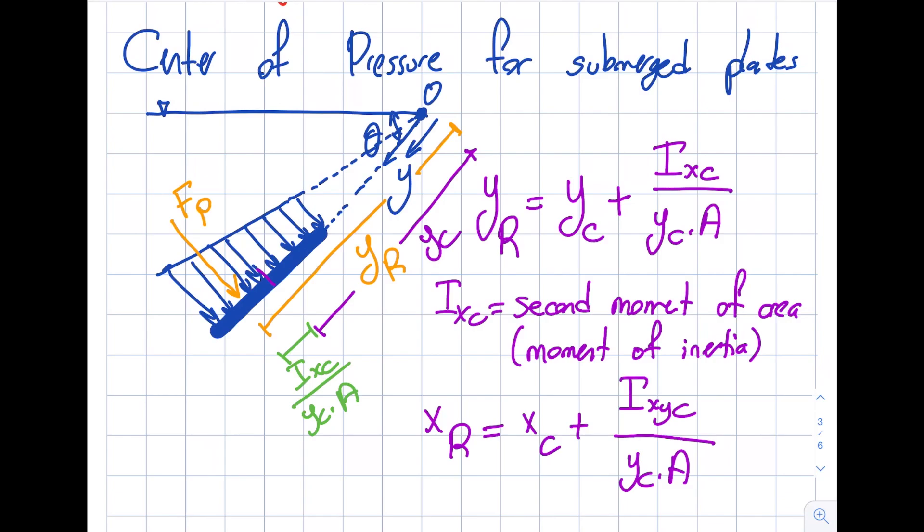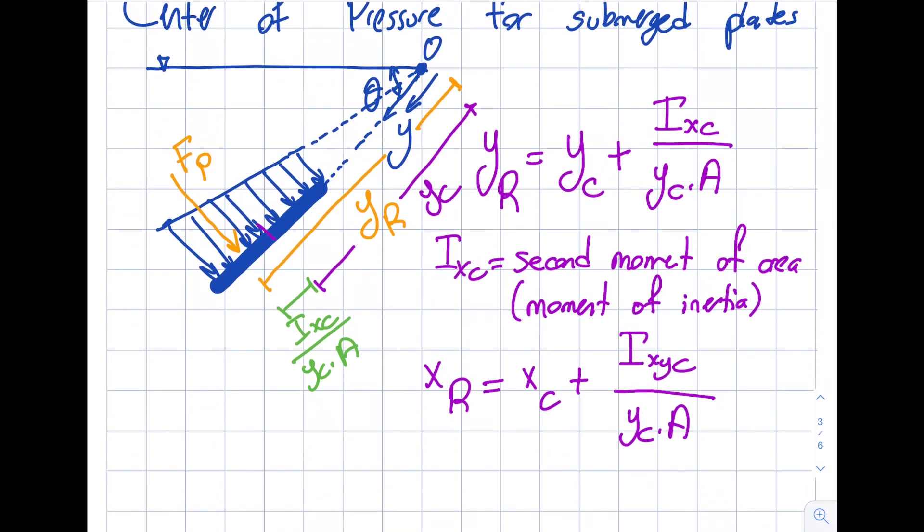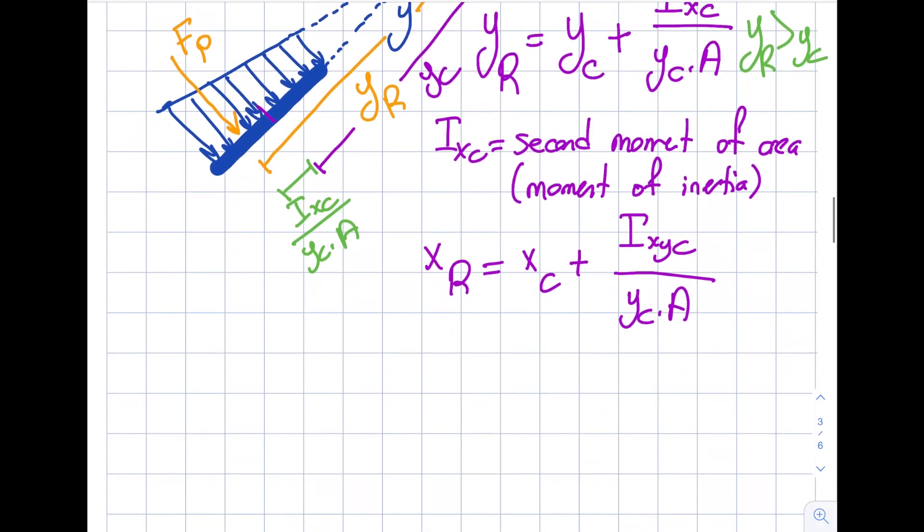If I do the same thing for IXYC in the X direction, remember X is going into the page, I can obtain where is the center of pressure for this particular geometry. One thing I would like to highlight is YR is larger than YC because I'm adding something additional to it. Typically, I have some good news: XR in many of the geometries we deal with will be equal to XC.